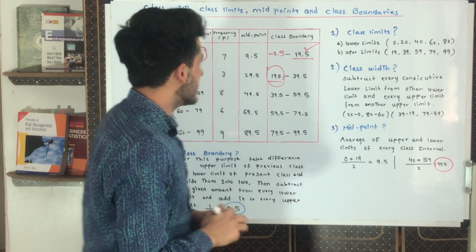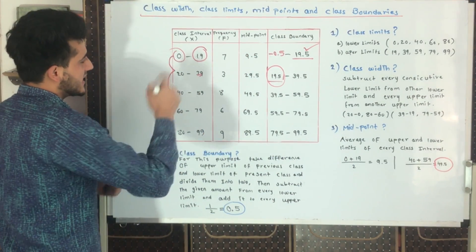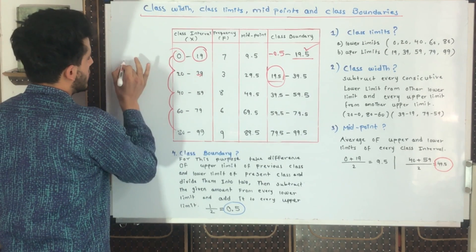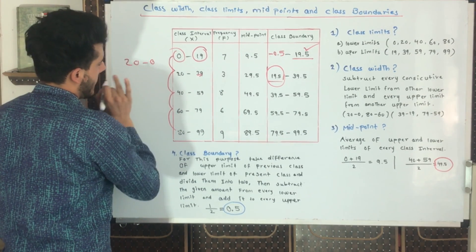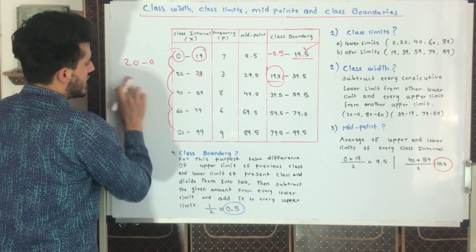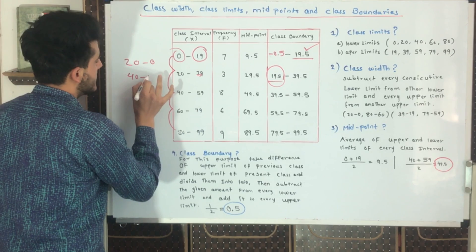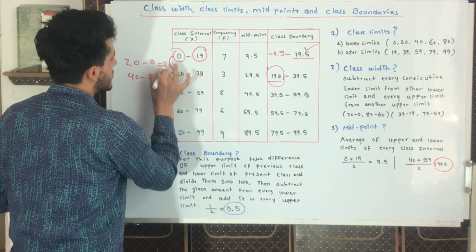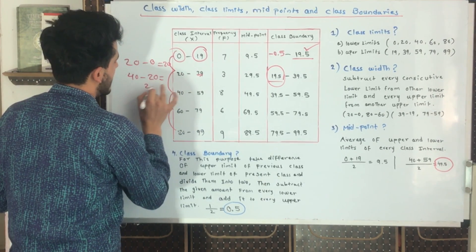It's very easy. You can take the difference between 0 to 20, so 20 minus 0 equals 20. 40 minus 20 equals 20. Every class interval will give the same result.